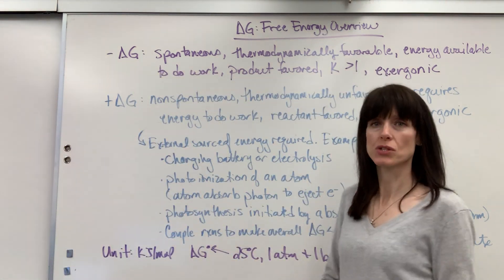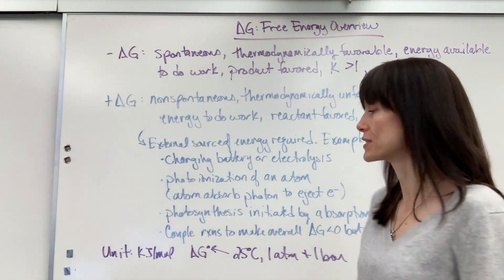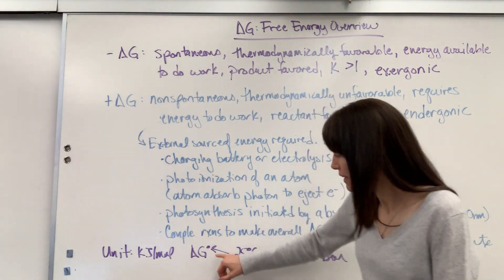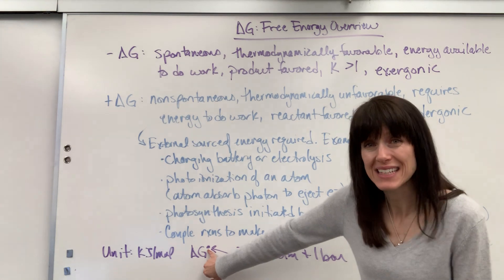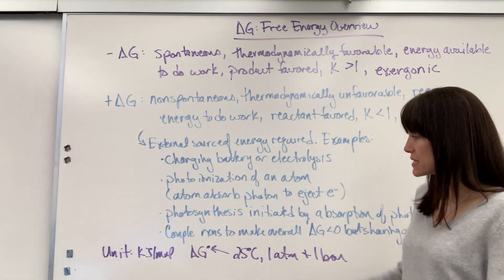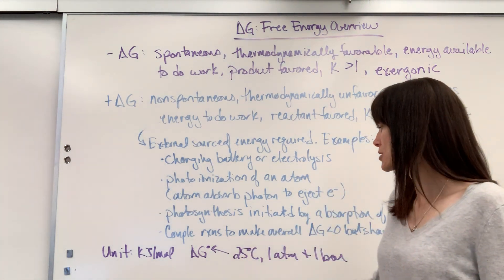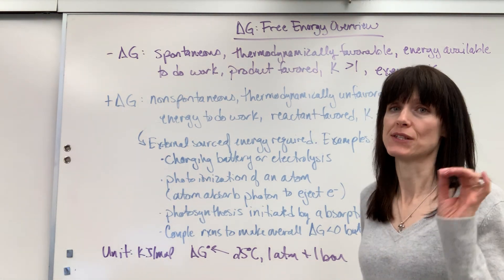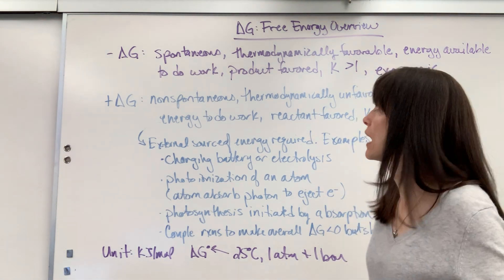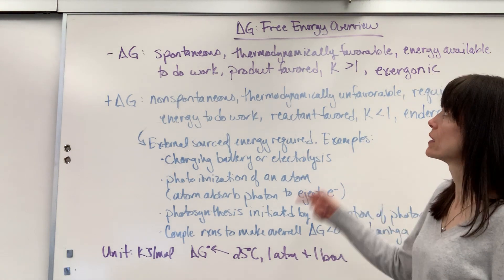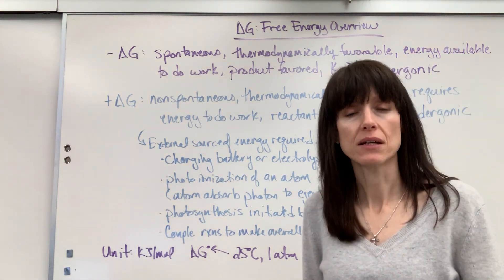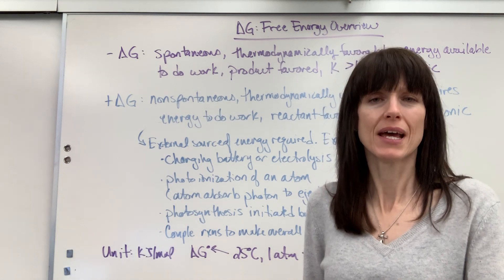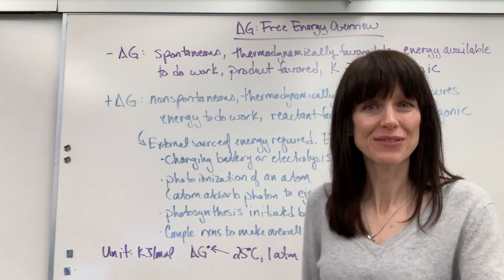Just overall, this is an overview for delta G. The unit for delta G is kilojoules per mole. When you have that little naught symbol, that indicates standard conditions. Standard conditions for thermodynamics is 25 degrees C and 1 atm — and if you have a gas, it's 1 bar. So there you have it: the overview. If you have more questions on free energy, take a look again at the Entropy and Free Energy playlist. Have a wonderful day — I'm so proud of you.